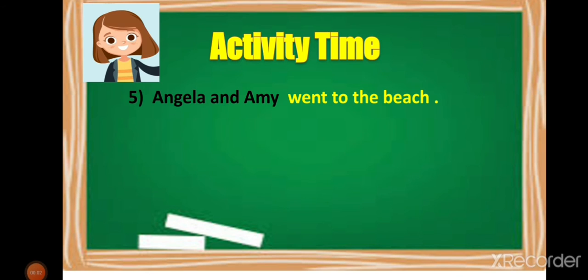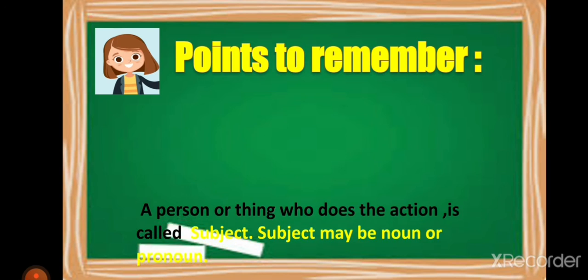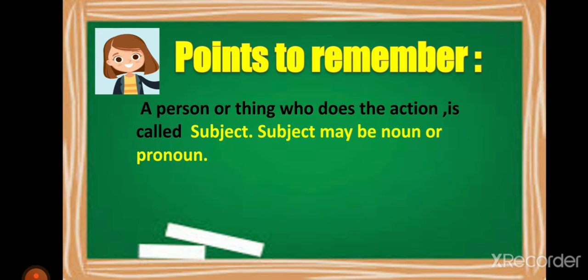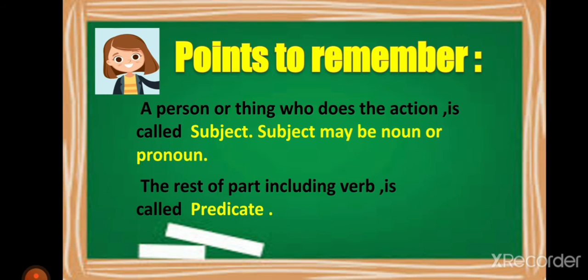Angela and Amy went to the beach. The verb is 'went.' Who went to the beach? Angela and Amy. Here the subject has more than one word. 'Angela and Amy' is the subject and 'went to the beach' is the predicate. So a person or thing who does the action is the subject — a noun or pronoun — and the rest of the part including the verb is the predicate.